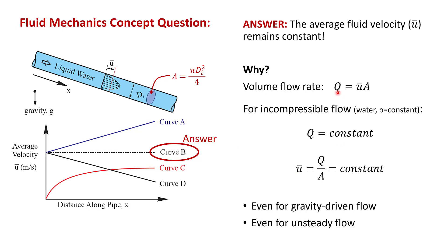We can rearrange Q equals u-bar times A to get that the average velocity is the volume flow rate divided by the cross-sectional area of the pipe. If the flow rate is a constant, and clearly the cross-sectional area of the pipe is a constant because the internal diameter is constant, then the average fluid velocity at any x location is a constant.